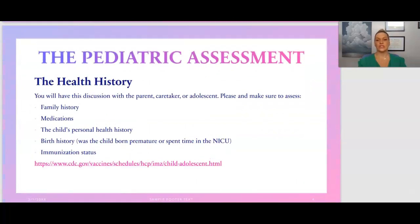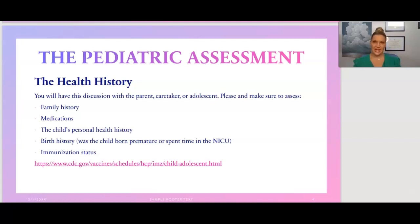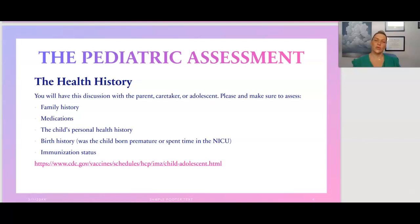Next, we move on to health history, which is similar to what you'd obtain from an adult. You'll have this discussion with the parent, caregiver, or the adolescent, since older children can participate in their own assessment. During the general health history, make sure to assess family history, medications, allergies, the child's personal health history, any chronic health conditions, and their birth history — including whether the child was born premature or spent time in the NICU.